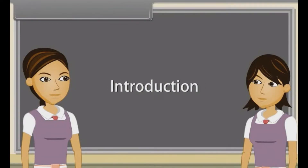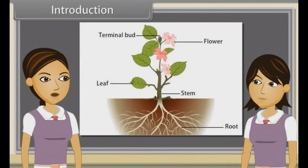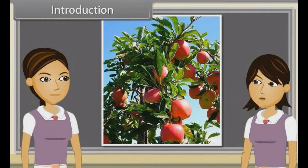When we observe a plant, we see that every plant has roots, stem and leaves. Plants also have flowers and fruits. We have already discussed characteristics, types, modifications and functions of roots and stems. Now we will study the leaf.